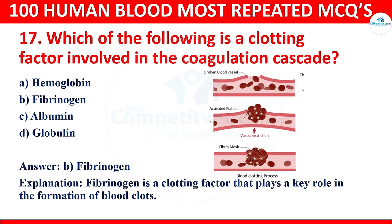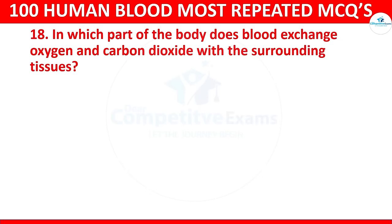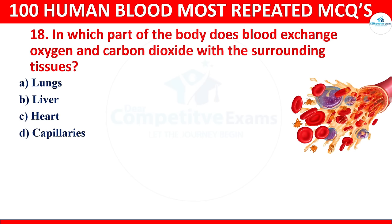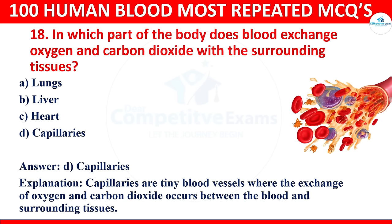Question 18: In which part of the body does blood exchange oxygen and carbon dioxide with the surrounding tissues? Options: lungs, liver, heart, or capillaries. The correct answer is capillaries. Capillaries are tiny blood vessels where the exchange of oxygen and carbon dioxide occurs between the blood and surrounding tissues.